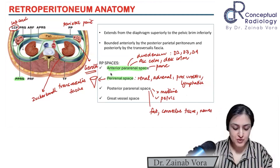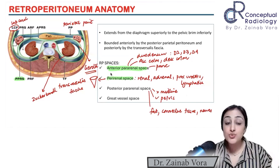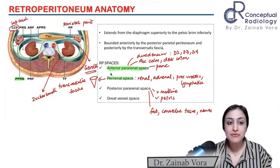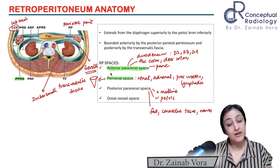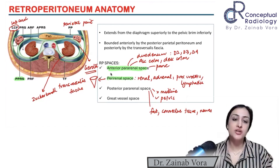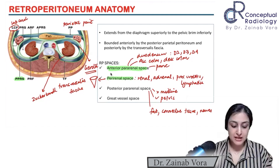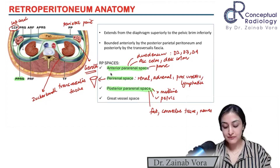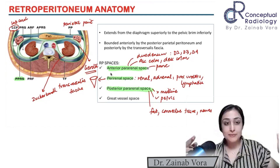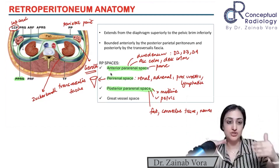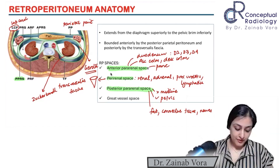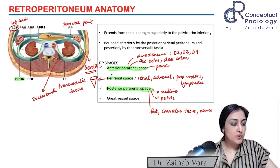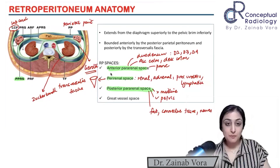Then we have a pseudo-space — not a true space because it is not lined by fascia. It is what is left: the vascular space where you have the IVC and aorta. So the real spaces outlined by fascia are three: anterior pararenal, perirenal, and posterior pararenal. The vascular space is not a real fascially-bounded space.